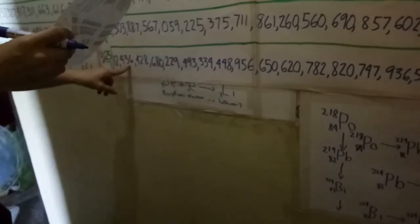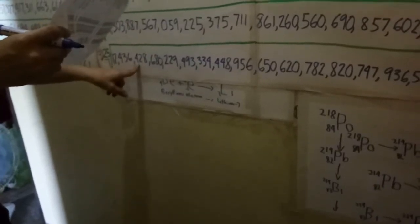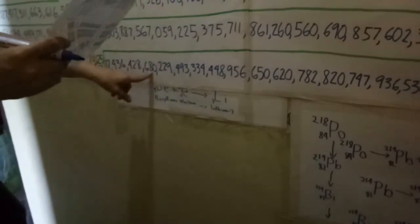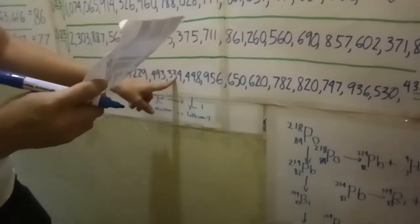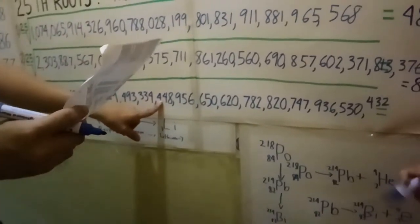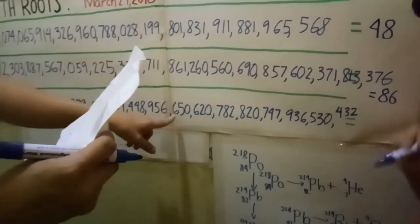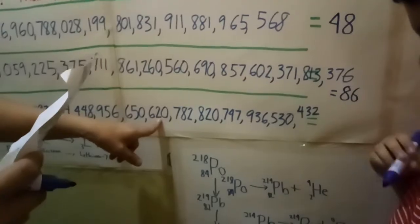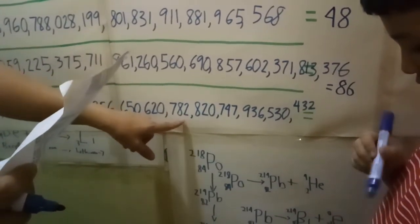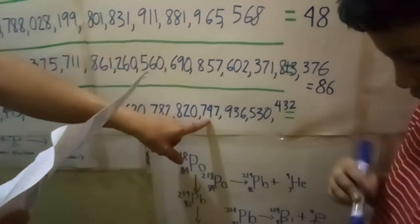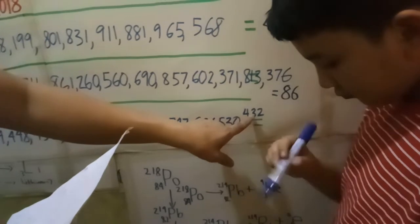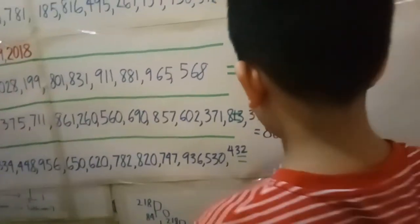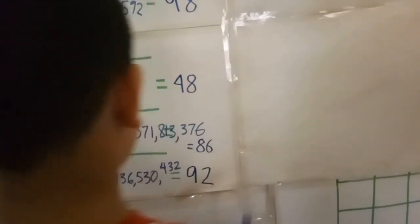What's the 25th root of 12 twin-decillion, 436 decillion, 428 decillion, 680 decillion, 229 decillion, 493 decillion, 334 million, 448 octillion, 956 septillion, 656 trillion, 620 quintillion, 782 quadrillion, 820 trillion, 747 billion, 900 — thirty-six million, five hundred thirty thousand, four hundred thirty-two? That's correct, yes.